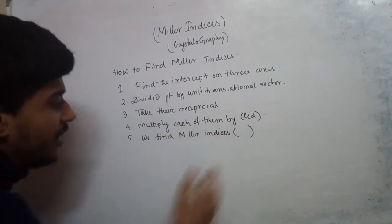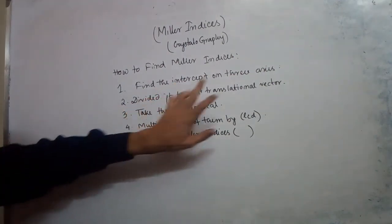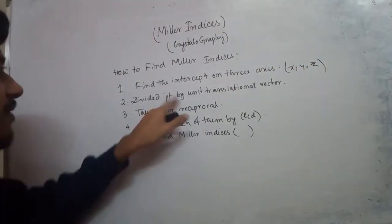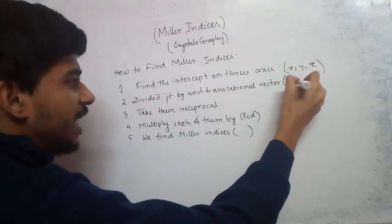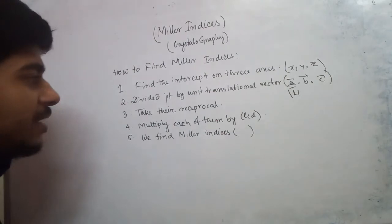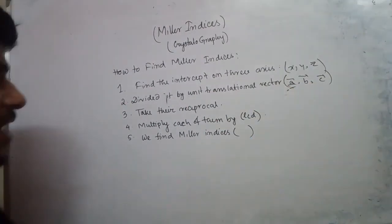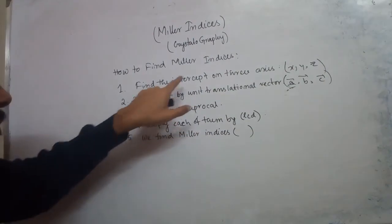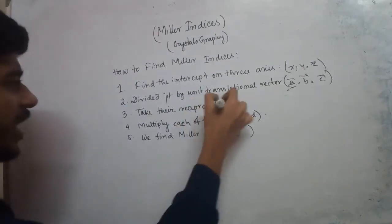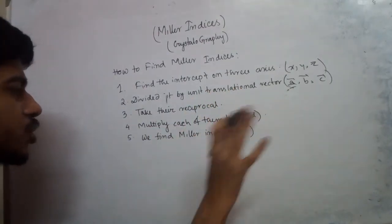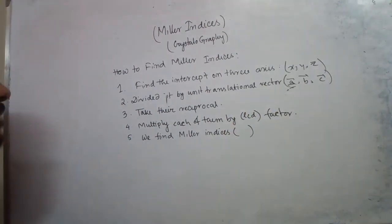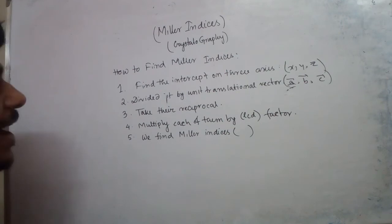To summarize the procedure: first find the intercepts on the three axes x, y, z. Divide each intercept by the unit translational vector — that is, the modulus of the three translational vectors a, b, c. Then take the reciprocal of each value and multiply each by the least common denominator factor. This gives us the Miller indices.